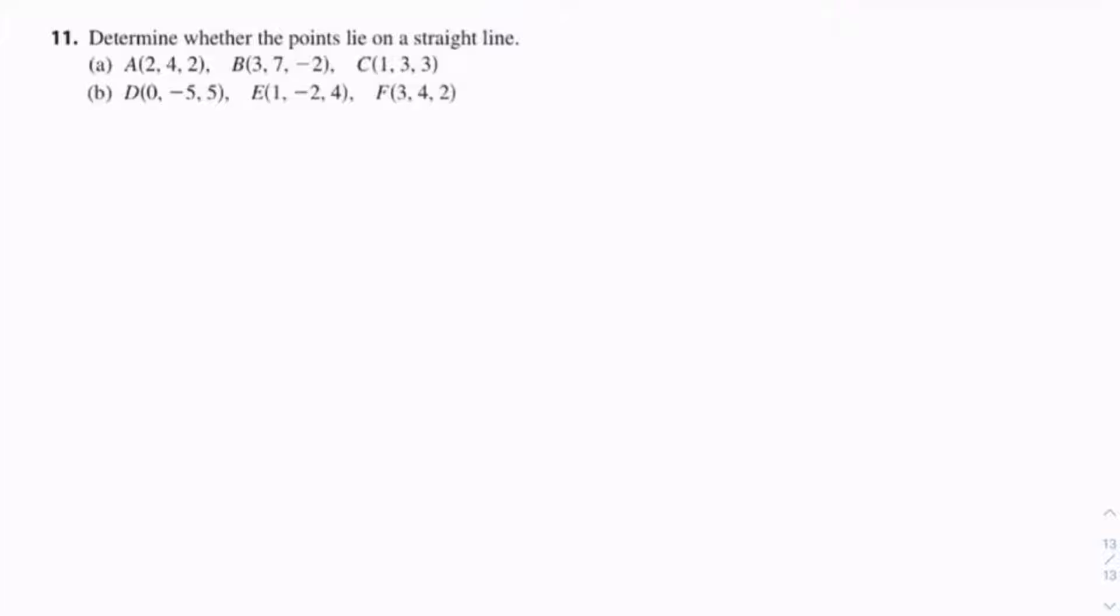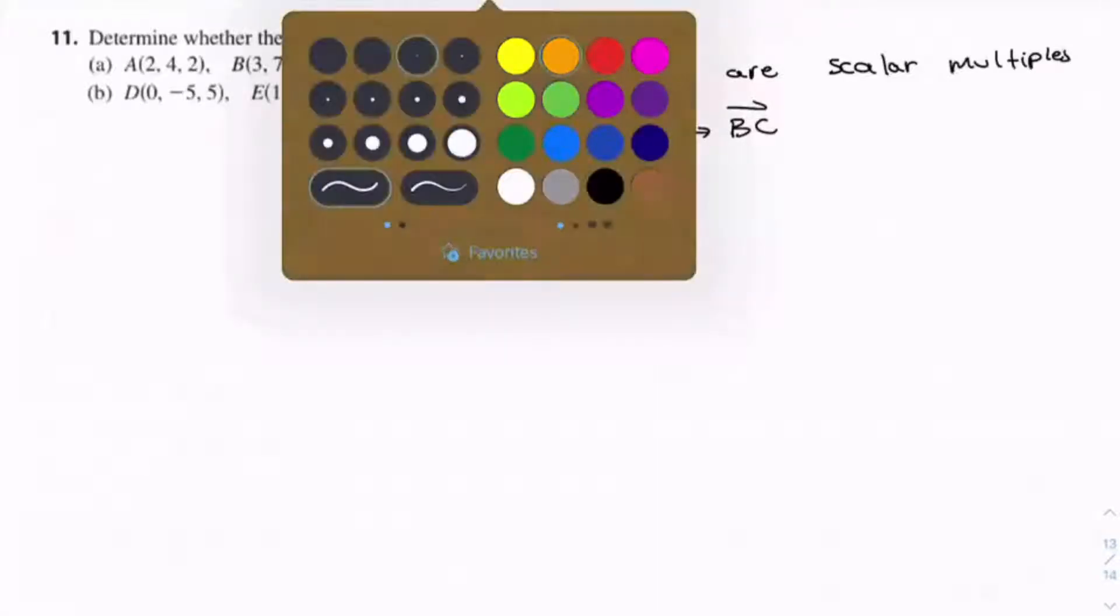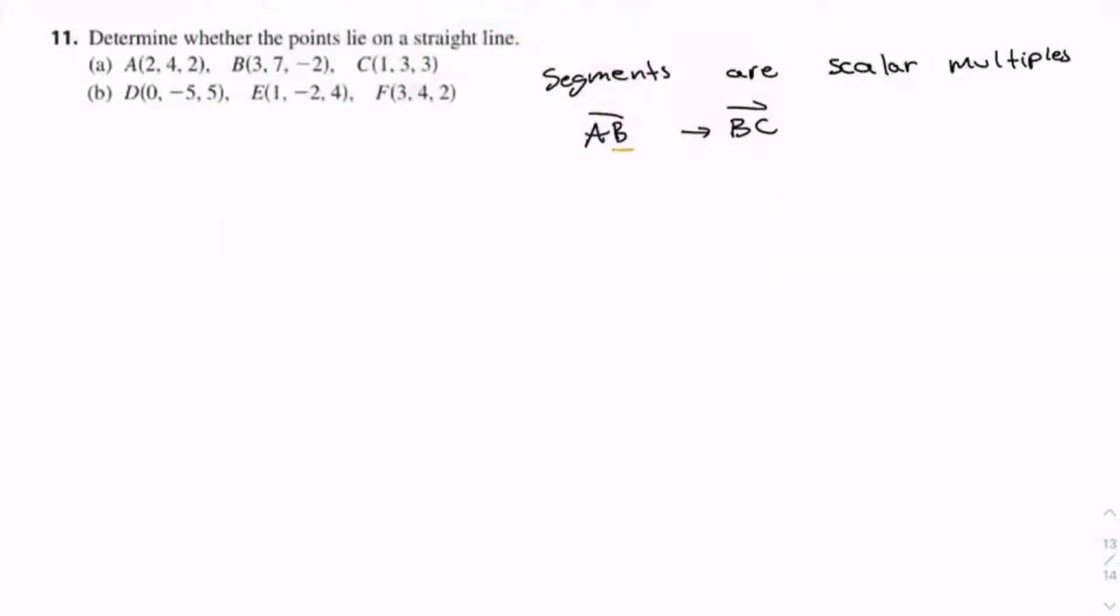So we know if points lie on a straight line, if their segments are scalar multiples, and when one segment ends, the other segment begins. So for example, you go A to B, and then you go B to C. And since they end and start with B, you know they're going to be part of a line.